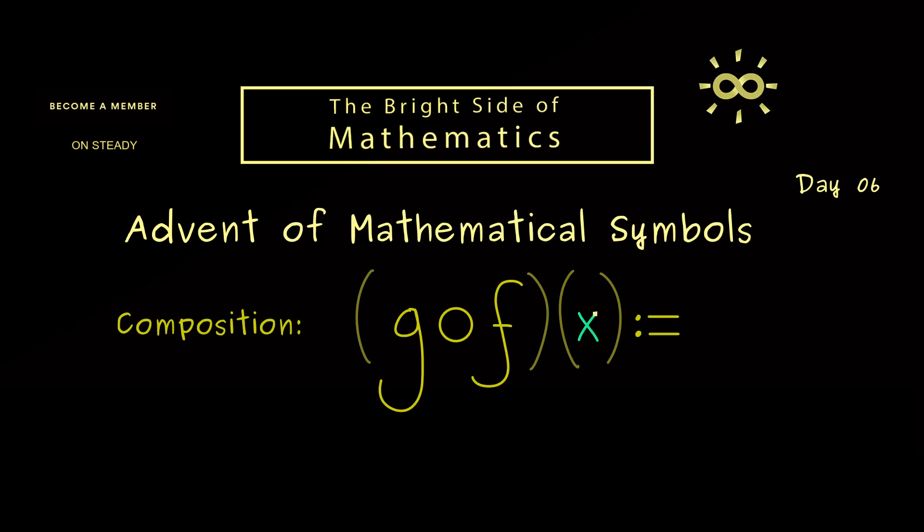First f is applied to x and then g is applied to this output. In other words, we put f into g. So we have g of f of x.